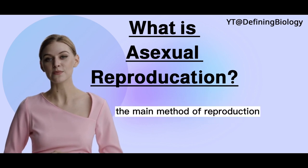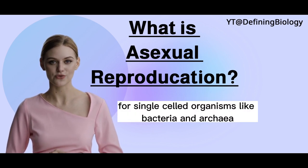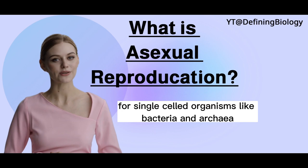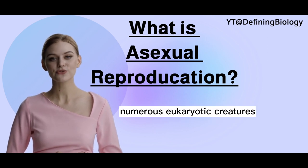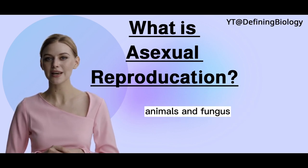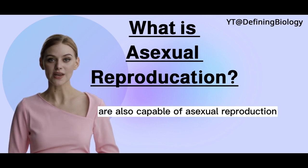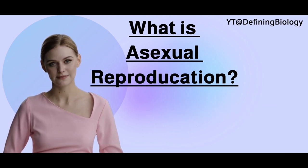The main method of reproduction for single-celled organisms like bacteria and archaea is asexual reproduction. Numerous eukaryotic creatures such as plants, animals, and fungus are also capable of asexual reproduction.